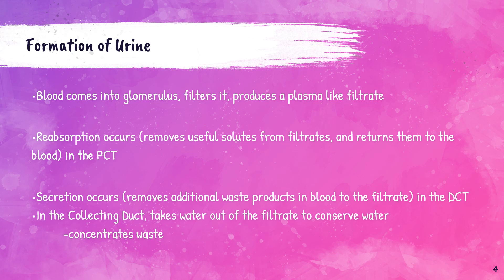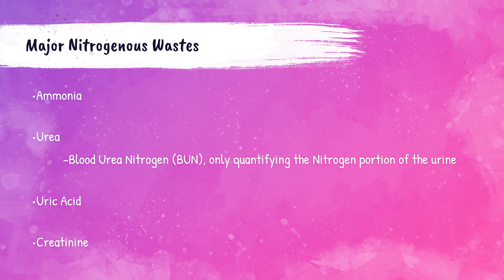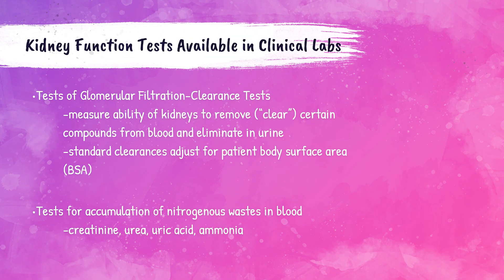We test for these nitrogenous wastes in the clinical laboratory. With the exception of urea, for that nitrogenous waste we test blood urea nitrogen, or BUN. There are clearance tests that assess the glomerular filtration ability of the kidney, which we'll discuss in the coming slides. We can also test for the accumulation of nitrogenous wastes: creatinine, blood urea nitrogen, uric acid, and ammonia.